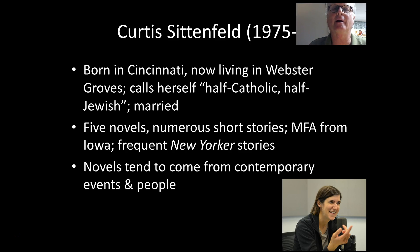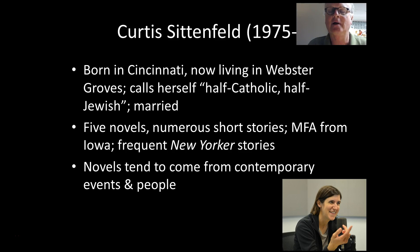Our third author is a contemporary writer, Curtis Sittenfeld. Born in Cincinnati, she has lived in New York, went to Vassar and then to Stanford. I've met her a couple of times at different literary gatherings and have read most of her books. She's famous for her novels — she's written five of them. Her most recent one, 'Eligible,' is a retelling of Jane Austen's extraordinary 19th-century novel 'Pride and Prejudice,' and it has received both tremendous criticism and tremendous praise. In terms of short stories, she's written many of them, published her first collection just a couple of years ago, and you'll find her frequently appearing in the New Yorker.